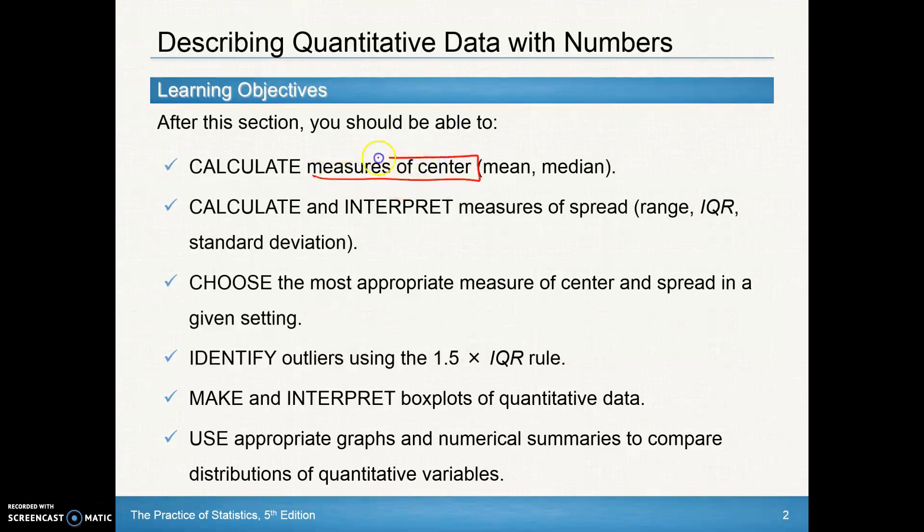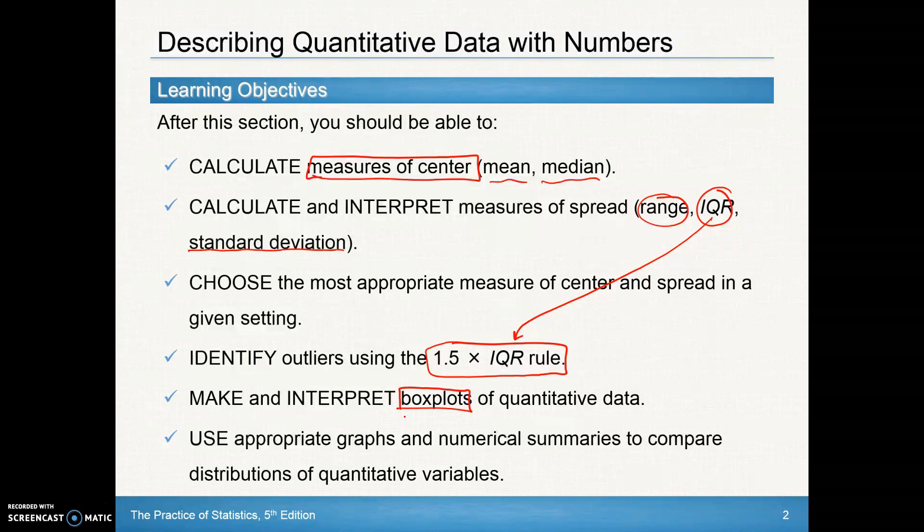Here are the learning objectives for this section. We'll be able to calculate measures of center, mean and median. We're going to learn how to calculate and interpret measures of spread: the range (max minus minimum), the IQR, and standard deviation. We're going to choose the most appropriate measure of center and spread in a given setting. We're going to identify outliers using the 1.5 times IQR rule. We're going to learn about box plots and use appropriate graphs and numerical summaries to compare distributions of quantitative data.